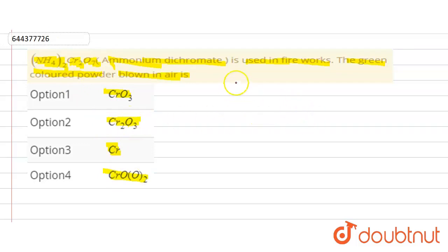Ammonium dichromate is used in fireworks. The green colored powder blown in the air is...